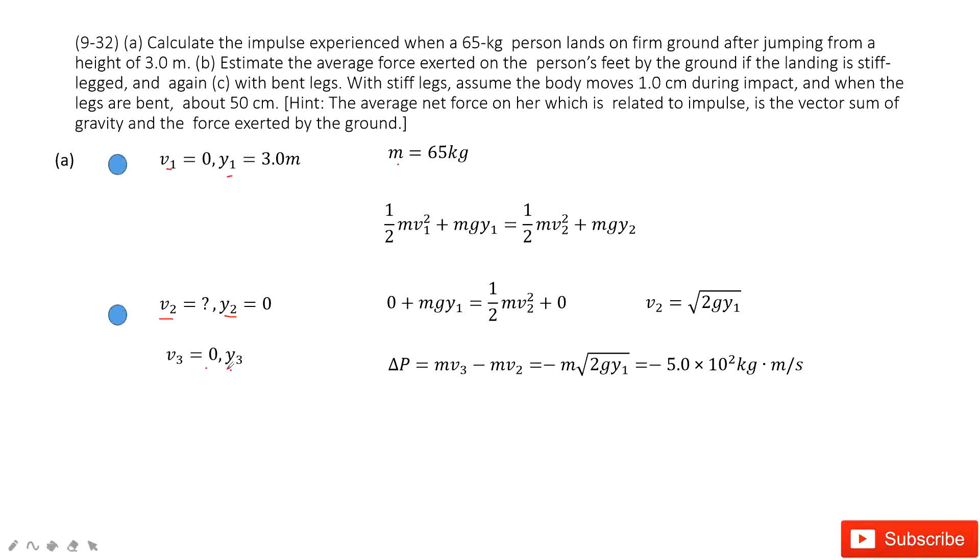first one, we need to find the impulse. The impulse this person can experience when they land on this ground from the height to stationary. It seems we need to find v2 first. How can we do that?